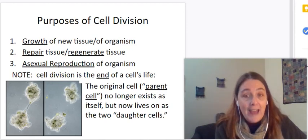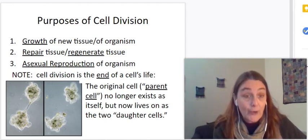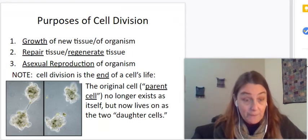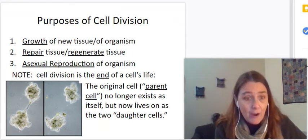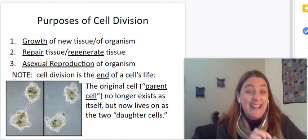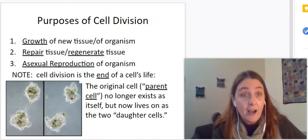And so those are the main reasons for mitosis, for asexual cell division. And we'll move on to how it is that these cells make identical cells next time.